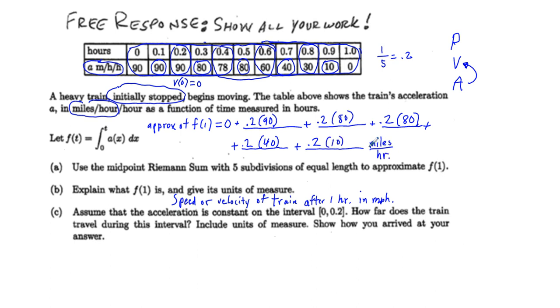And really, according to AP standards, we've done all we need to do. Now, if you want to, we can figure out what these are and get a numerical value just for real world understanding what's going on. So 0.2 times 90 is going to be 18. And then 0.2 times 80 would be 16. 0.2 times 80 would be another 16. 0.2 times 40 would be 8. And finally, 0.2 times 10 would be 2. So I think this ends up being 60 miles per hour. Anyway, so I've answered A and B.